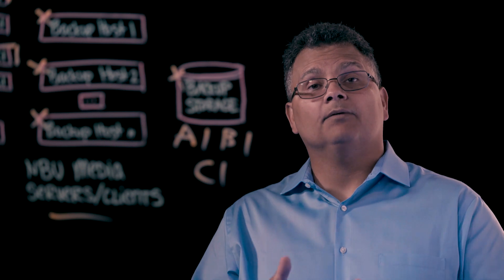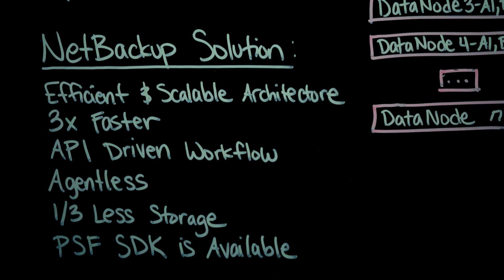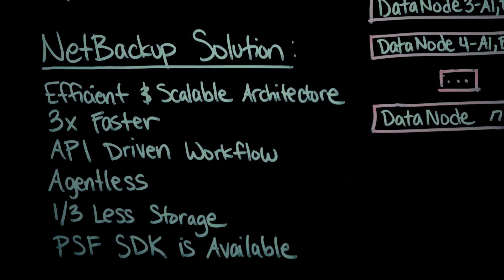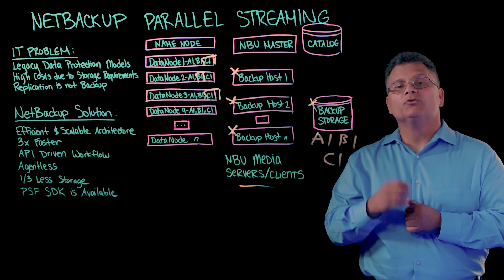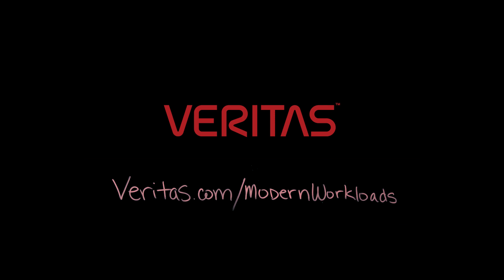Let's recap the value of NetBackup Parallel Streaming. First, it's efficient and scalable — we do not back up the same blocks multiple times. Second, it's three times faster because we leverage multiple backup hosts to protect the workloads. Third, it's API-driven, which means it's very agile and nimble — we can change as the workloads change. Fourth, it's agentless; no agent was placed on the primary data nodes, only a lightweight plugin on the backup host. We use one-third less storage because we protect the data one time to our storage pool, and if that storage pool is a NetBackup appliance with a deduplication pool, we get even more savings. We also introduced, in the latest version of NetBackup, a Parallel Streaming SDK kit that would allow you to integrate your workloads with our architecture. For more information, visit veritas.com/modern-workloads.